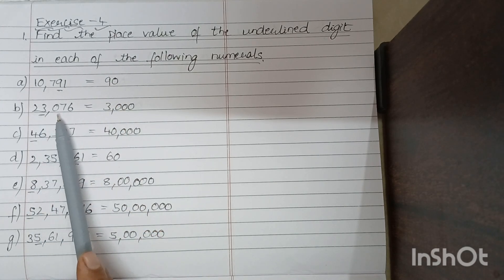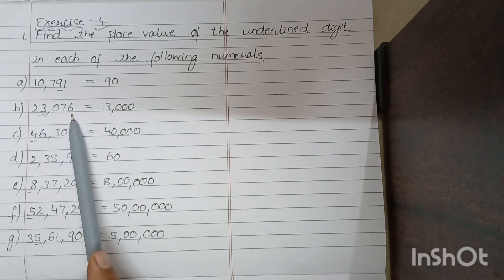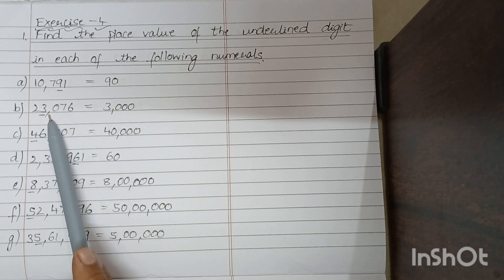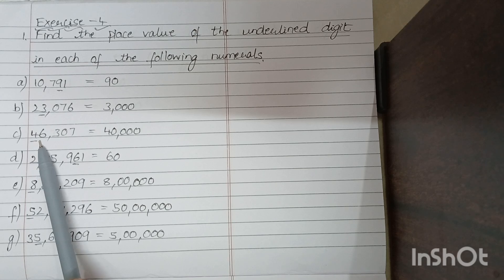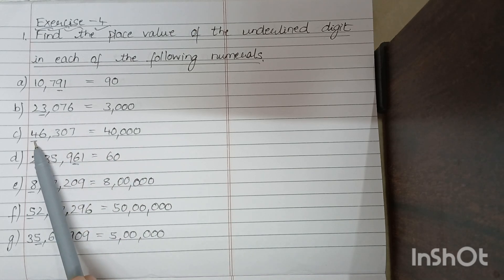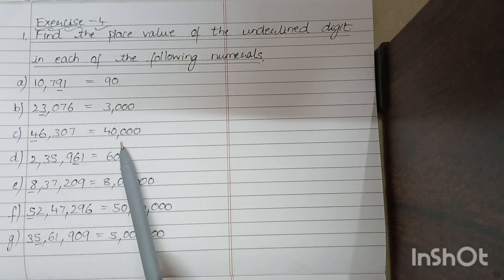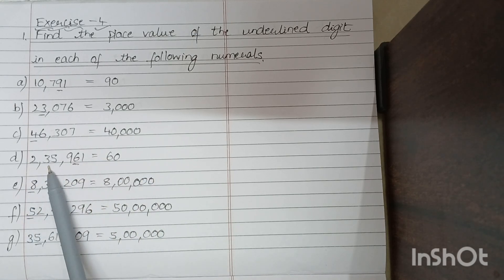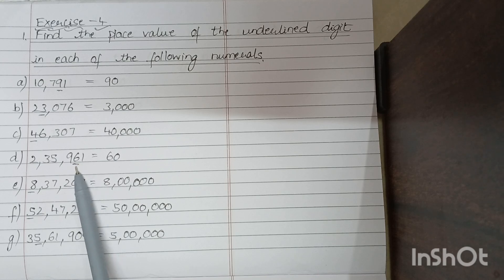23,076. The underlined digit is 3, so 3 is 3,040. Next, 46,307. So 4 is in 40,000. Next, 2,35,961 — 6 is 60.